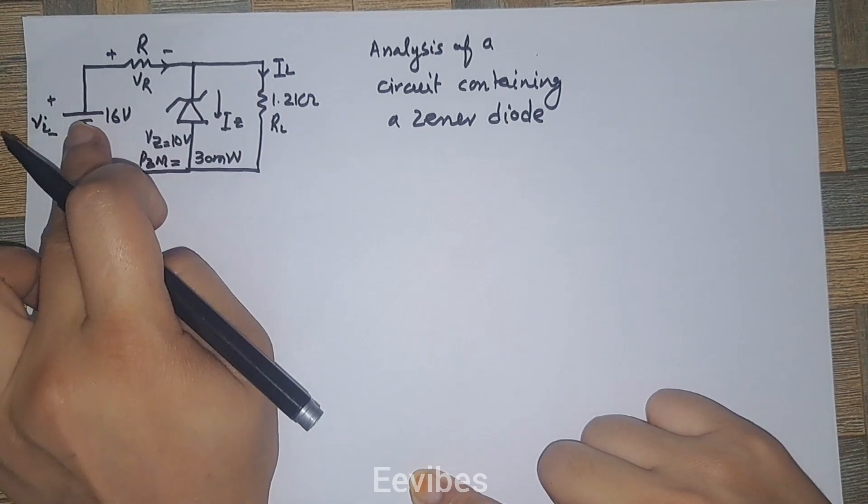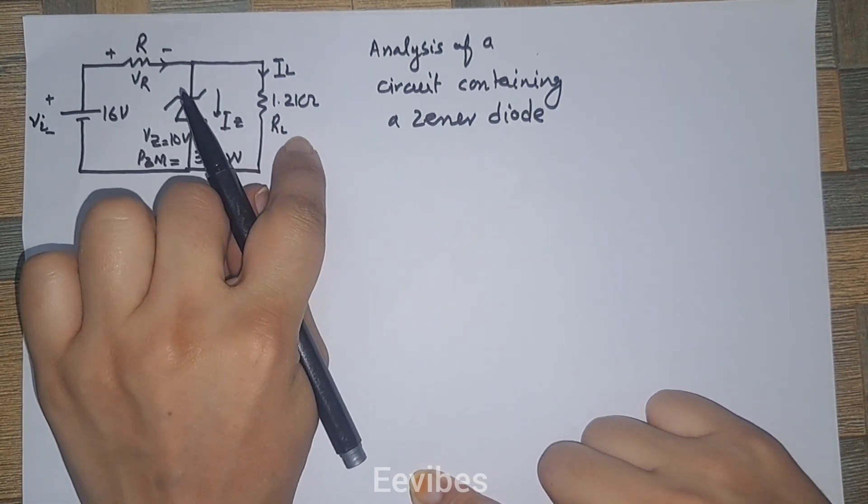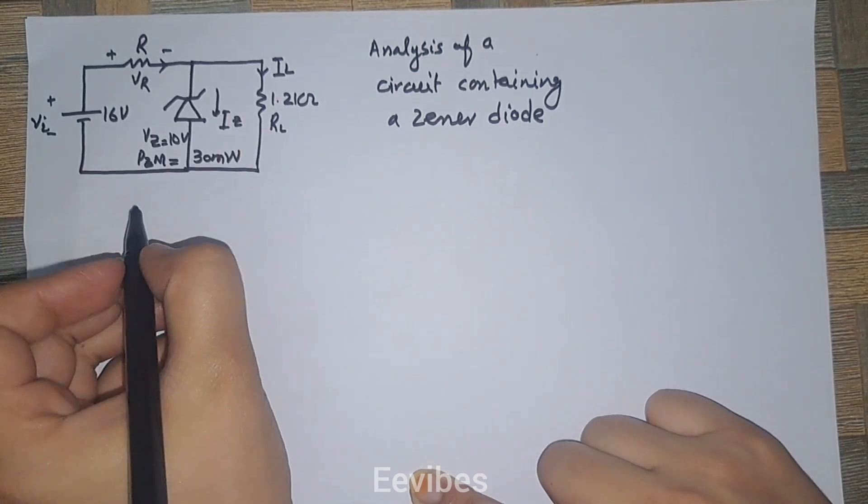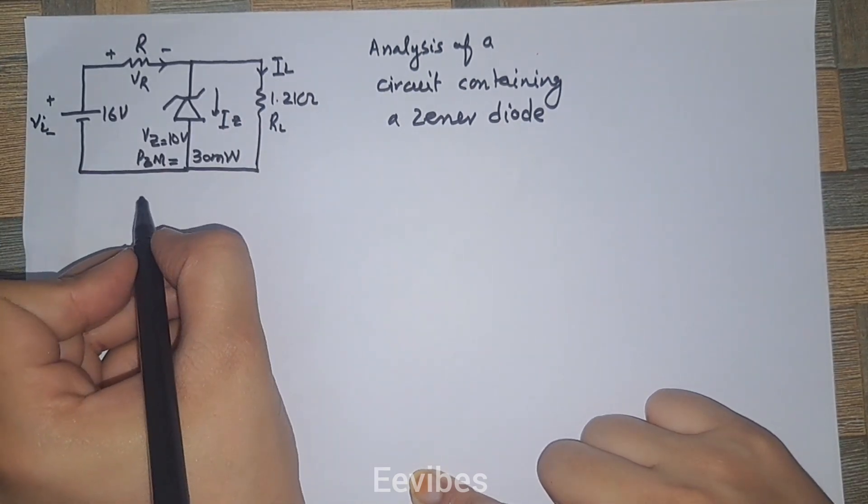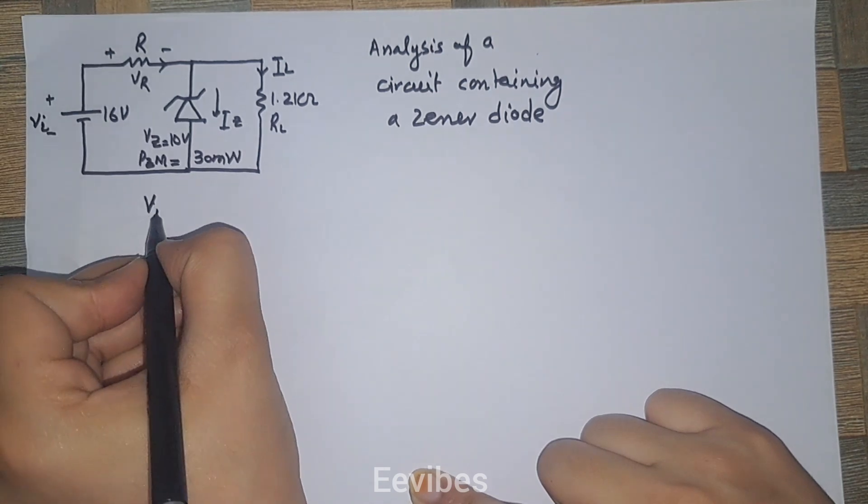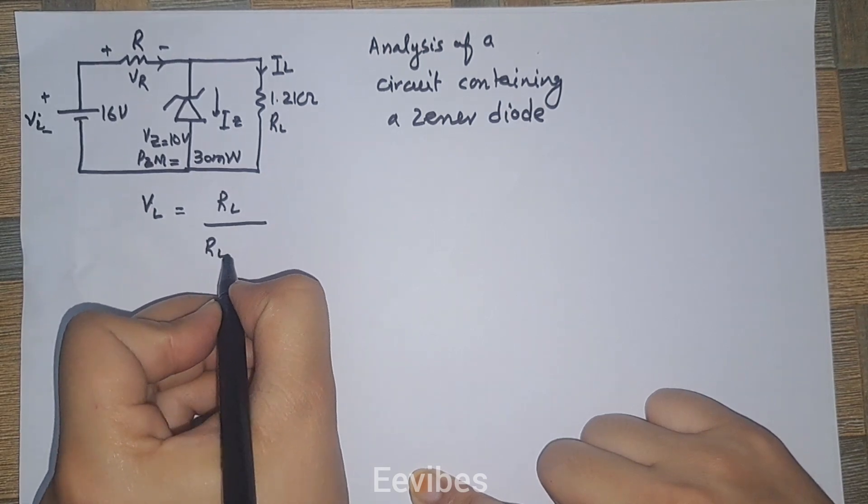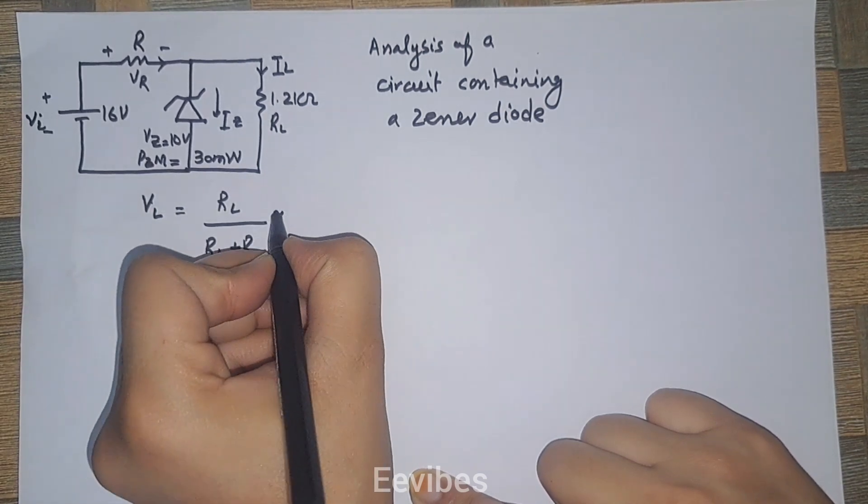Let's suppose the zener diode is not present and we only have the input voltage, current limiting resistance, and load resistance. Now, applying the voltage divider rule, which says that VL equals RL divided by RL plus R into Vin.